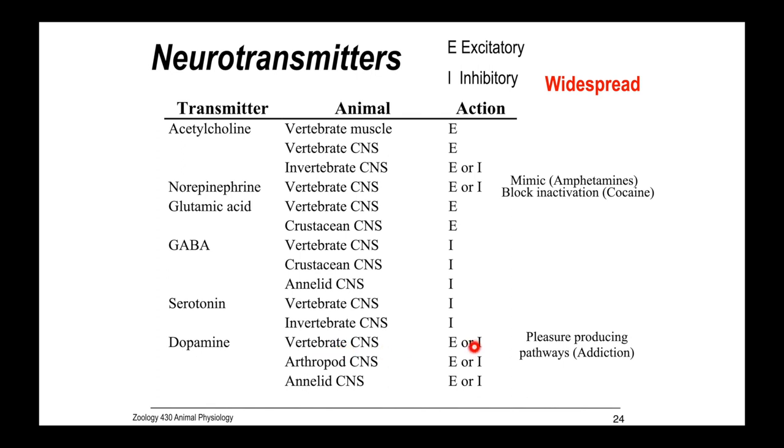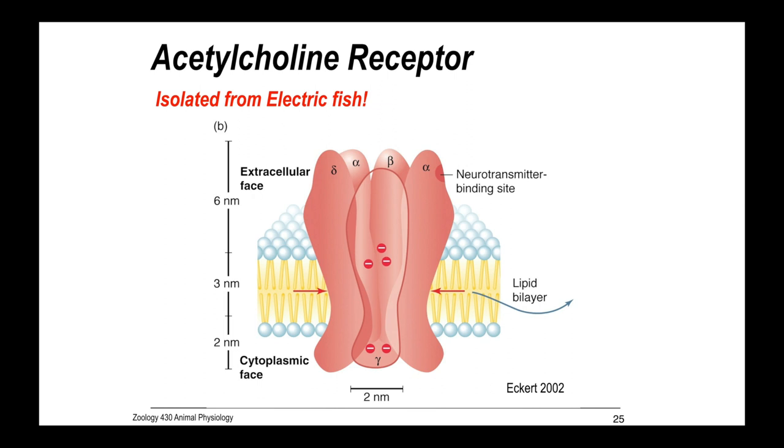Dopamine in the vertebrate CNS is pleasure-producing, and so this is associated with addiction. Serotonin in the vertebrate CNS, and we can also have drugs that block reuptake, such as Prozac.